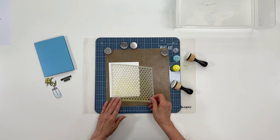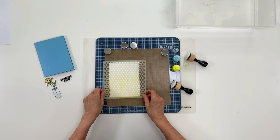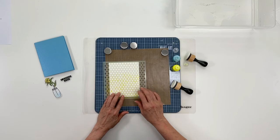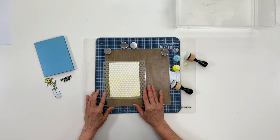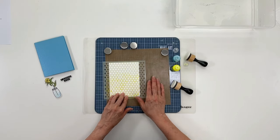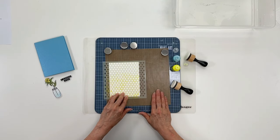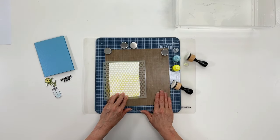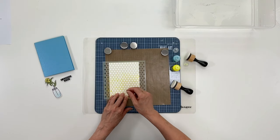I'm just going to place my stencil centered onto my card here. I'm working on the non-stick craft sheet and I'm going to be putting my liquid pearls here. So that's why I'm over to the side a little bit.